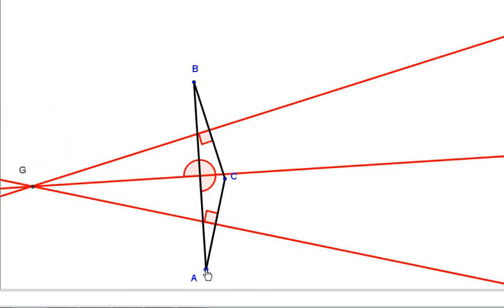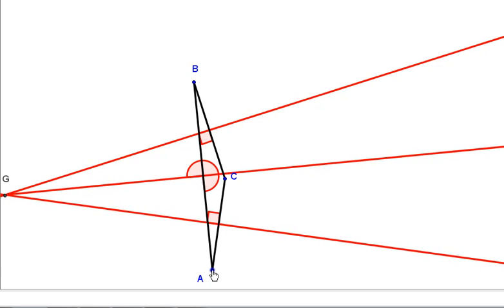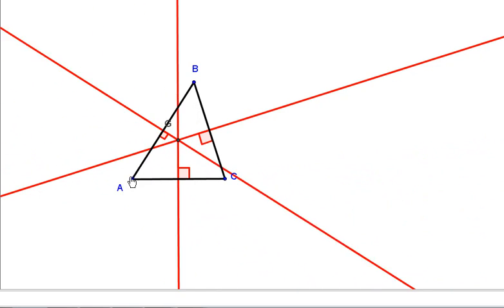The more obtuse the angle, or the greater the degree of the angle if it's obtuse, the further that circumcenter moves away from the triangle.